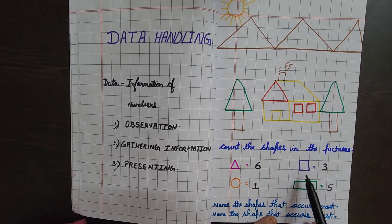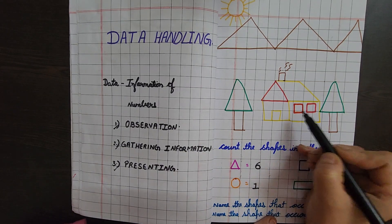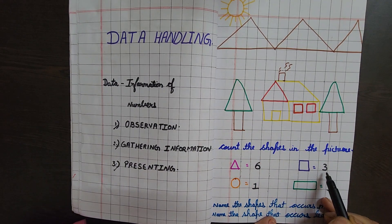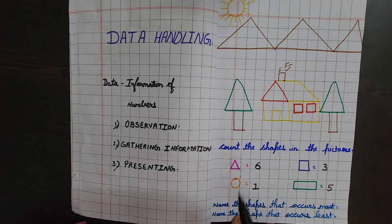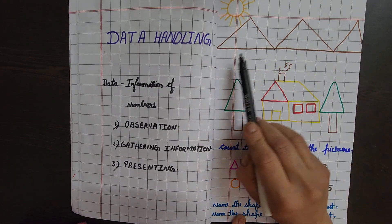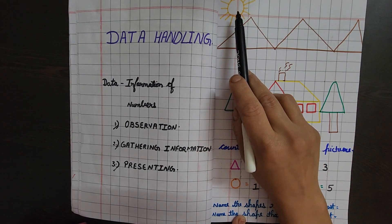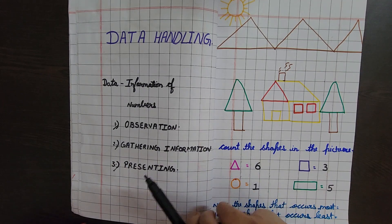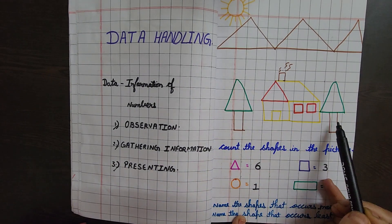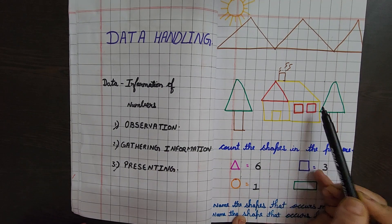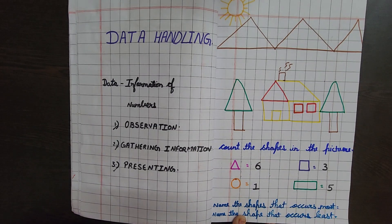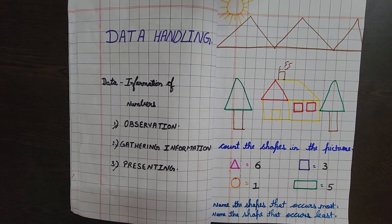Now squares — how many squares do I have? One, two, three — three squares. Next, circles — how many circles? Only one circle. And how many rectangles? One, two, three, four, five — five rectangles.